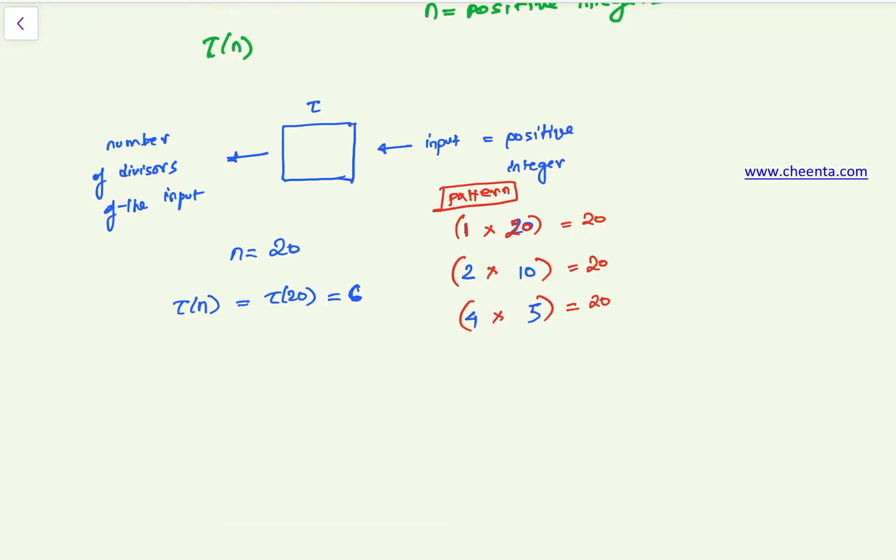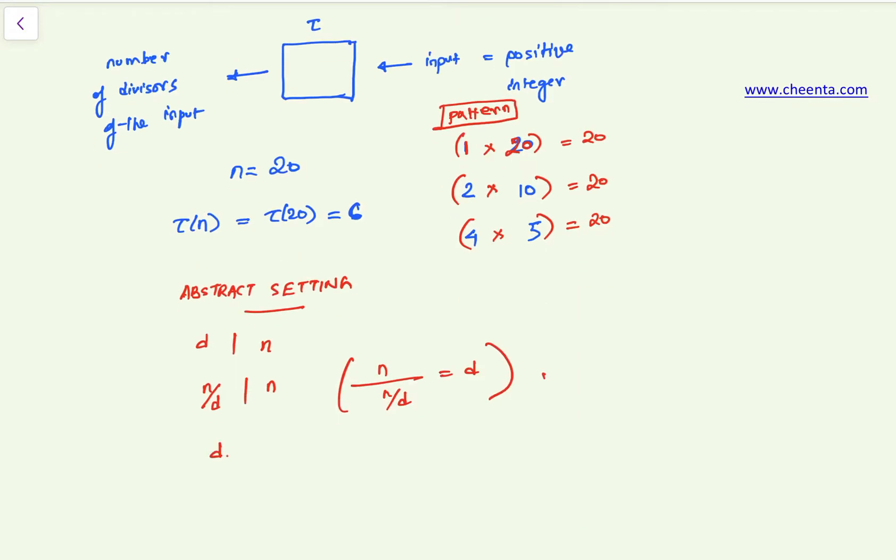So each divisor has its corresponding pair and this is obviously true for any particular number n. Why? Because in the abstract setting, suppose we have a natural number n and we have a divisor of n, d. So suppose d divides n.